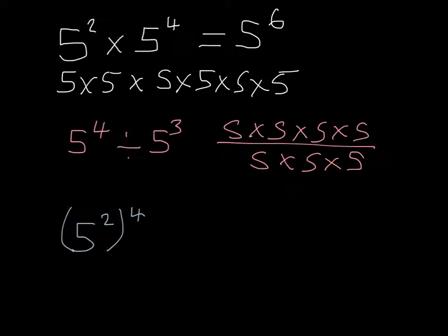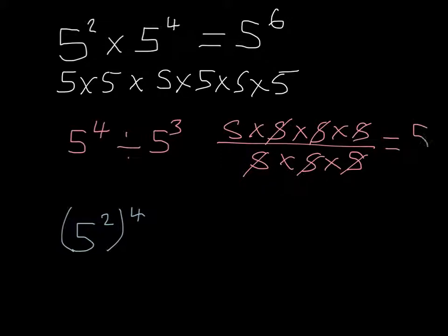If we have a look at this, I've got four 5s here multiplying together and three 5s here multiplying together. What I want to do is cancel some of these out — this 5 and this 5 will cancel out, this 5 and this 5 will cancel out, and this 5 and this 5 will cancel out. Because it's on the numerator, I can say that this is going to be equal to 5 to the power of 1, which is just basically 5.